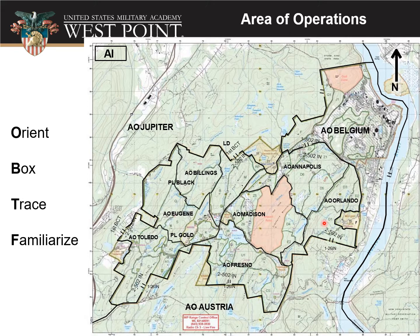Box — you want to lay out your AO boundaries. So for instance, if we're in AO Madison here, we might mention just the grid lines that bound our AO. We're going from the 7-9 to the 8-4 grid lines east to west, and something like the 60 to the 65 or whatever they might be. That just boxes out where our AO boundary is on the graphic.